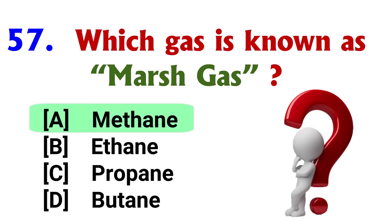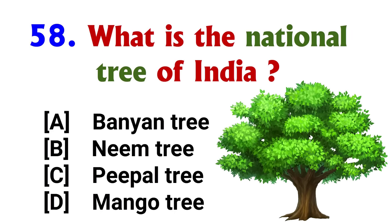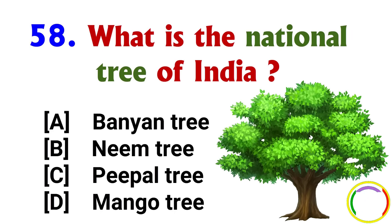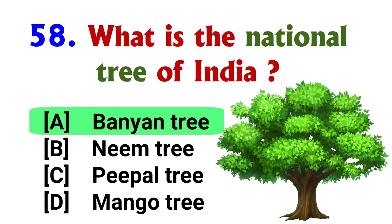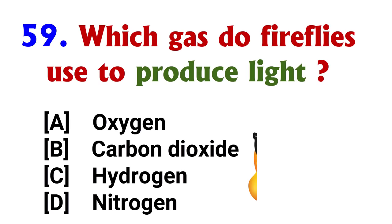Which gas is known as marsh gas? Answer: option A, Methane. What is the national tree of India? Answer: option A, Banyan tree.